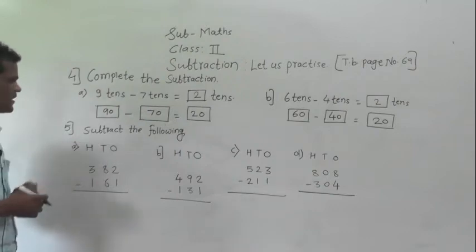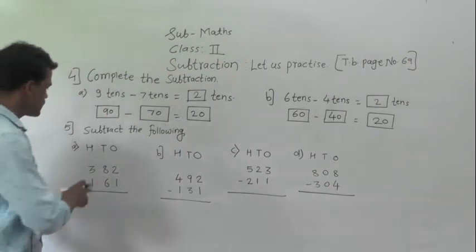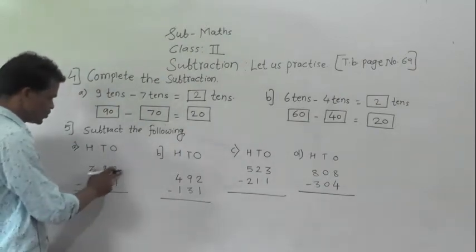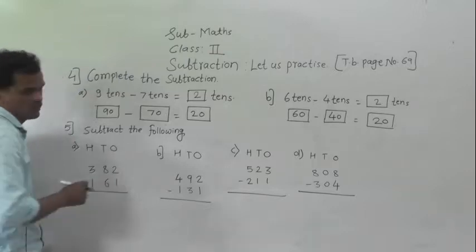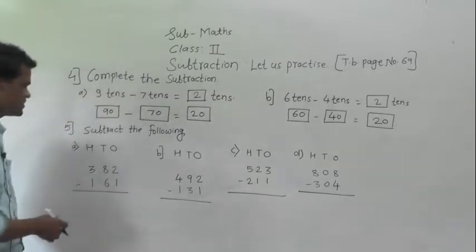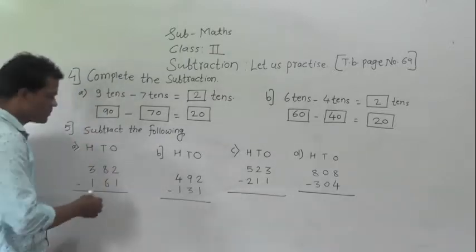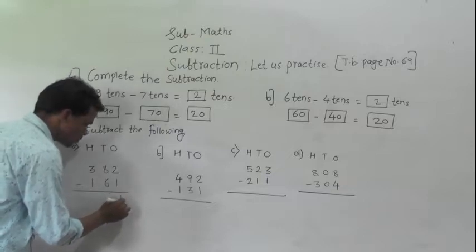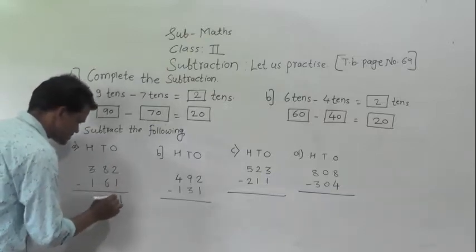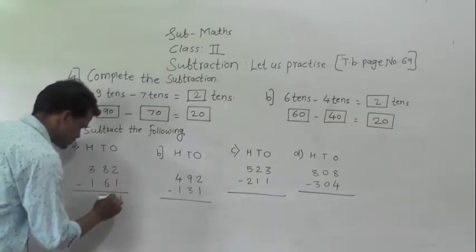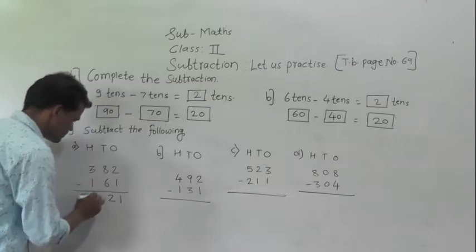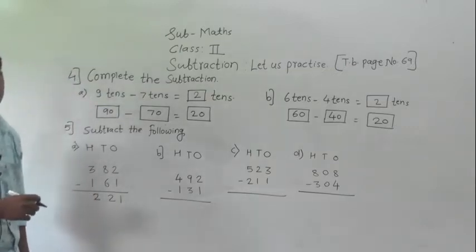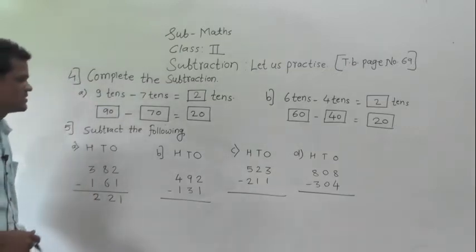Subtract the following: 382 minus 161. Start from ones place: 2 minus 1 is 1, 8 minus 6 is 2, 3 minus 1 is 2. So 221 is the answer.